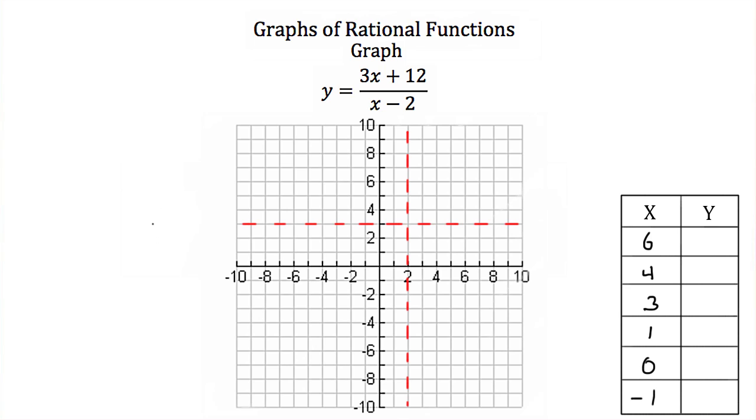Now let's plug all these in. We'll start with 6 for x. If I do that I'll have y equals 3 times 6 plus 12 all over 6 minus 2. 3 times 6 is 18 plus 12, and you'll have 30. 6 minus 2 is 4, and 30 divided by 4 is 7.5, or 7 and 1 half.